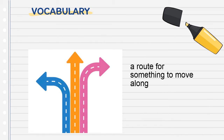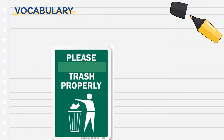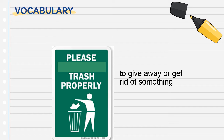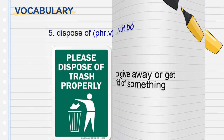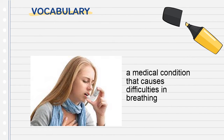One more: a route for something to move along — so what is it? Yes, it is pathway. Now look at the picture and tell me the missing phrase: it means to give away or get rid of something. Yes, it is disposed of. Look at the next picture: it is a medical condition that causes difficulties in breathing. Is it asthma? Yes, asthma.